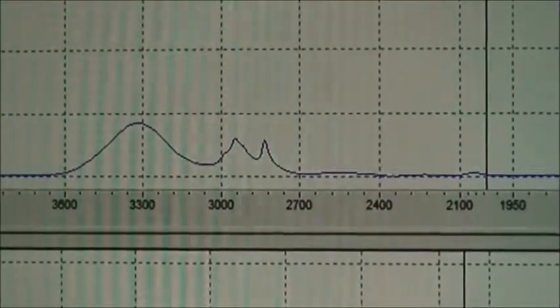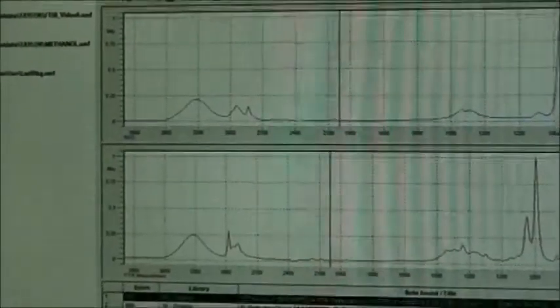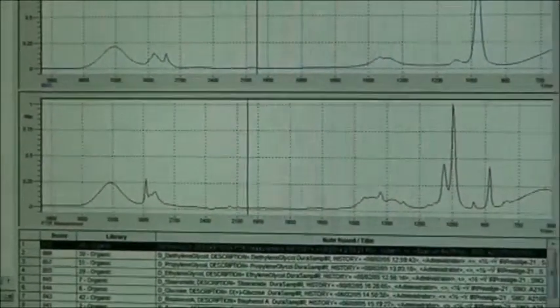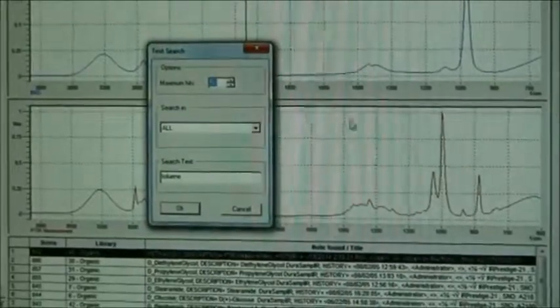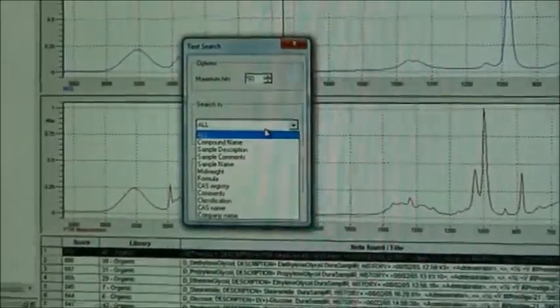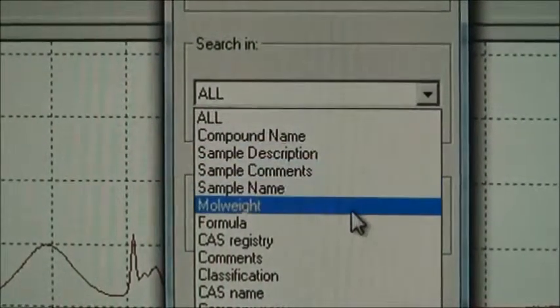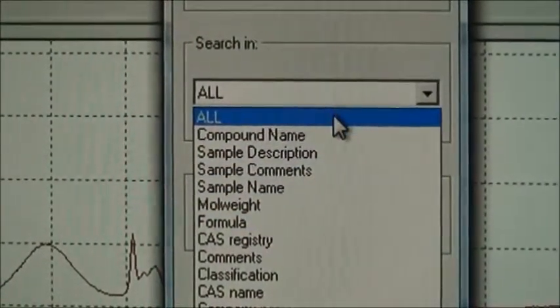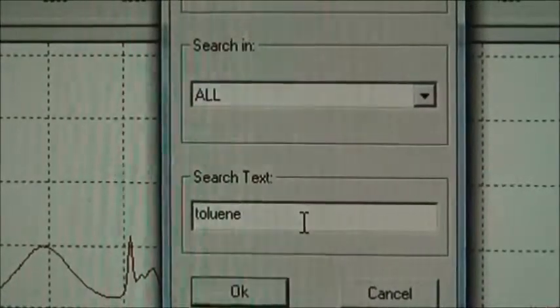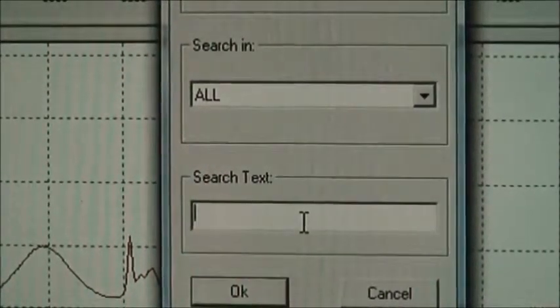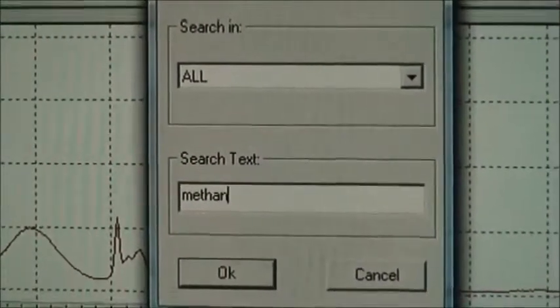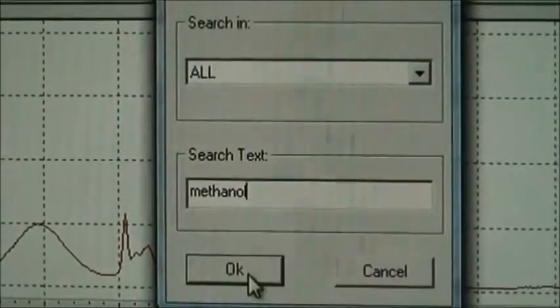So that's one thing you can do. If you want to do a text search, you can search compound name, sample description, sample name, molecular weight formula. We're just going to search for all that. And let's say if I were to search methanol.